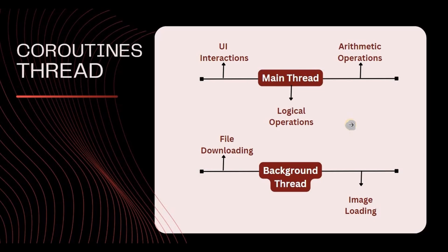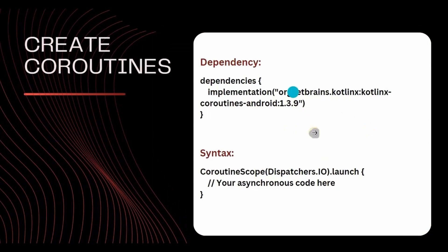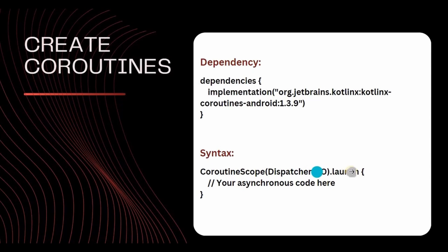Now in coroutines there are a few terms you need to understand, for which we first need to see how we create coroutines. To implement coroutines in the app you need to add the dependency. The general syntax is: CoroutineScope(Dispatcher.IO).launch. To understand coroutines deeply, we need to understand two terms: scope and its types, and dispatcher and its types.